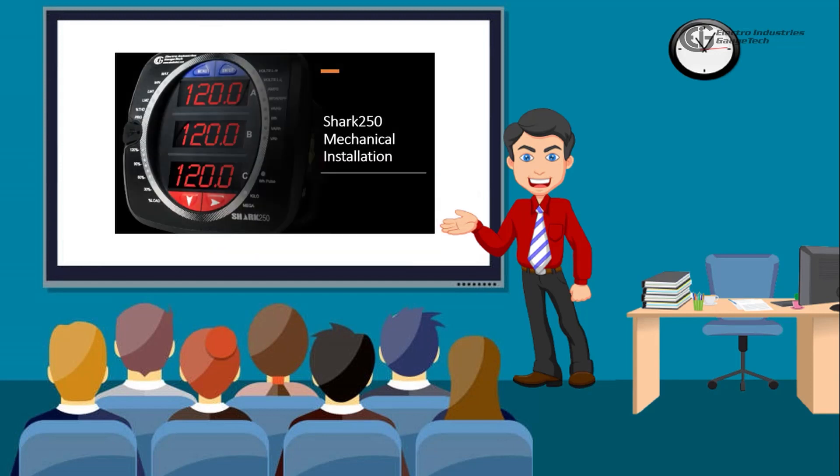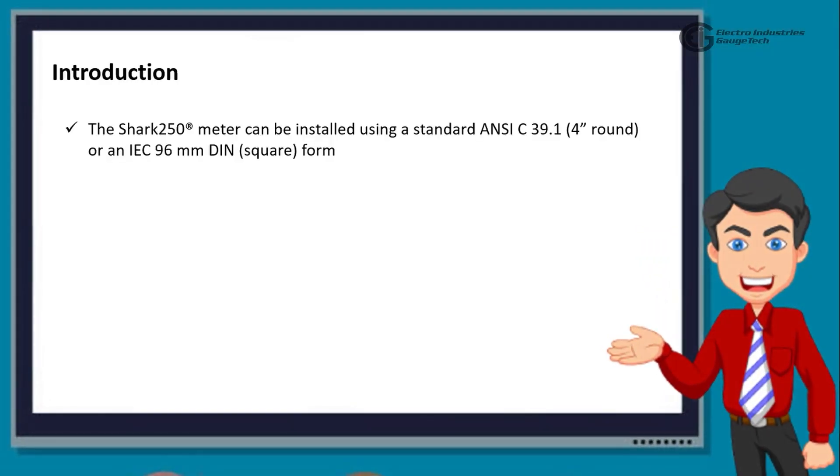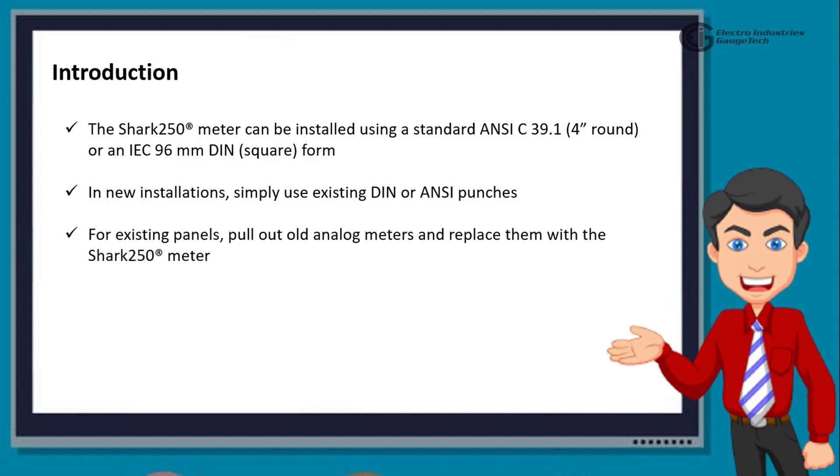We will begin with mechanical installation. The Shark 250 meter can be installed using a standard NCC 39.1, 4 inches round, or an IEC 96mm DIN square form. In new installations, simply use existing DIN or ANSI punches. For existing panels, pull out old analog meters and replace them with the Shark 250 meter.